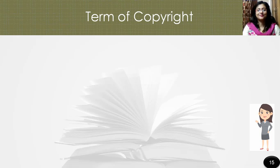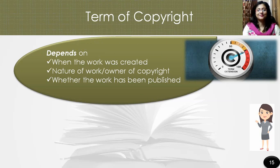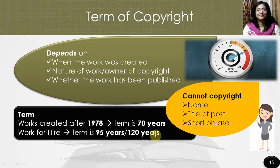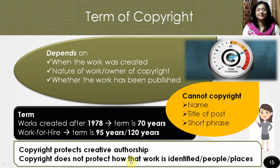We are now going to look into the term of copyright. A copyright has a term or length depending on when the work itself was created, the nature of work, the owner of copyright, and whether the work has been published or not. For works created after January 1, 1978, the term of copyright is the life of the author plus 70 years, or if the work is a work for hire, the term is 95 years from first publication or 120 years from creation, whichever expires first. You cannot copyright your name, the title of your post, or any short phrase you use to identify a work, as copyright is designed to protect works of creative authorship, not how that work is identified in the marketplace.